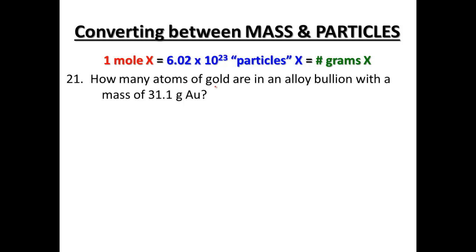We're going to work through number 21 in our notes. How many atoms of gold are in an alloy bullion with a mass of 31.1 grams? An alloy bullion is just a gold brick. So we know right away that we have 31.1 grams of gold, and we're trying to find how many atoms. We can't go directly from grams to atoms — we need a stopping point along the way.